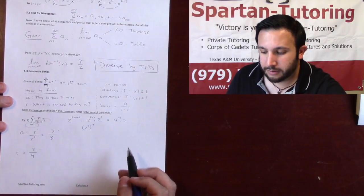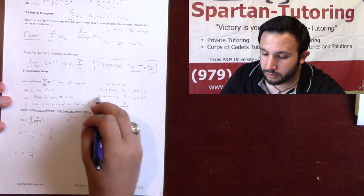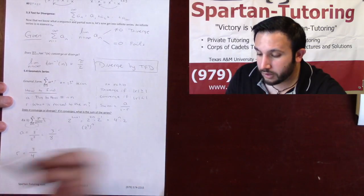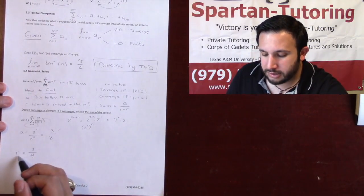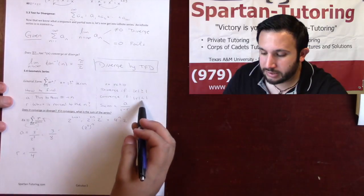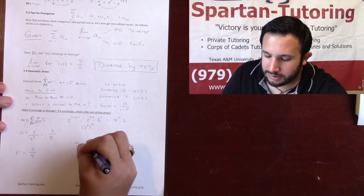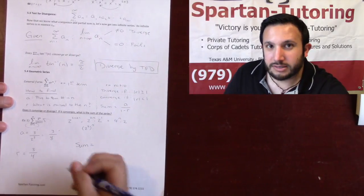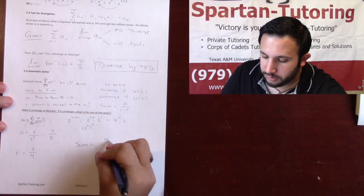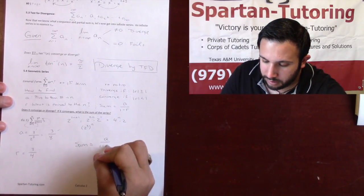Now does it converge or diverge? Well, it's definitely going to converge. It's definitely going to converge because the absolute value of this r, this 3 fourths, is less than 1. You know what's really cool about this stuff? Man, you can find the infinite sum of this series. The infinite sum of this series is just going to be a over 1 minus r.